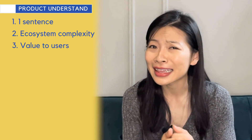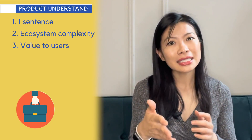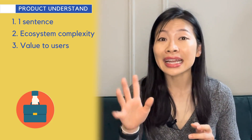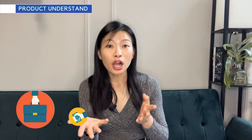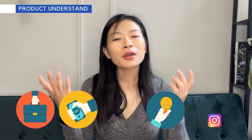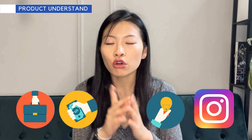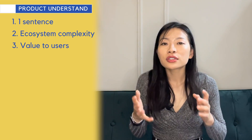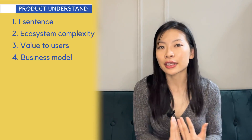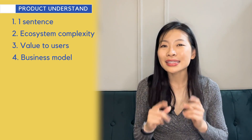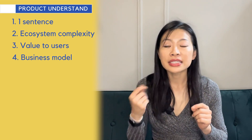Once you call out the ecosystem players, you want to identify what each one is there to accomplish — the value they get. Businesses are here to list items and generate revenue. Shoppers are here to find interesting items they'd love to own. Creators are here to produce content, engage their audience, and promote products they find valuable. And what about Instagram? This leads to the third part: the business model behind the main stakeholder.